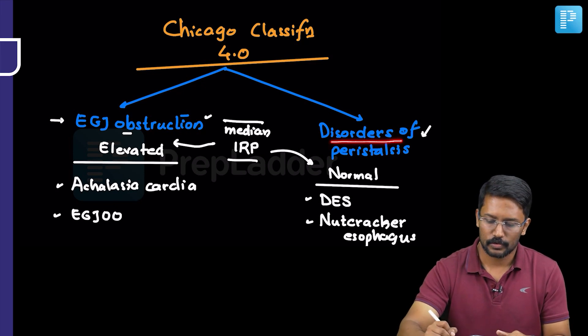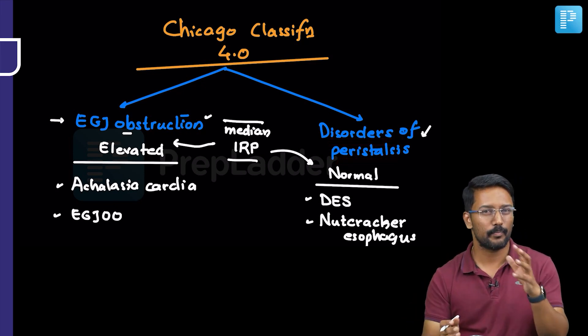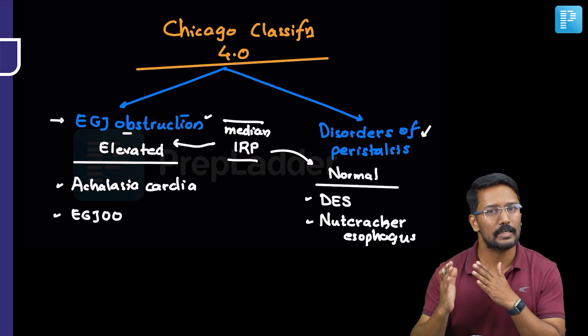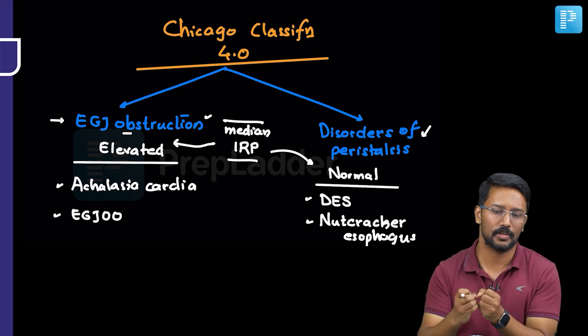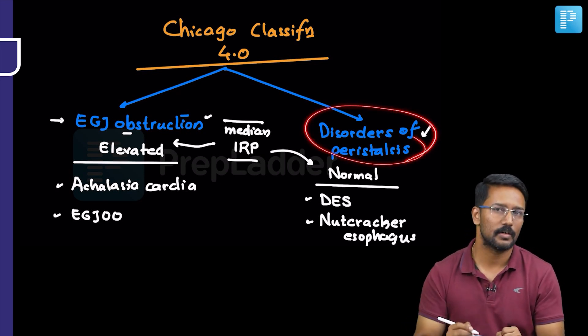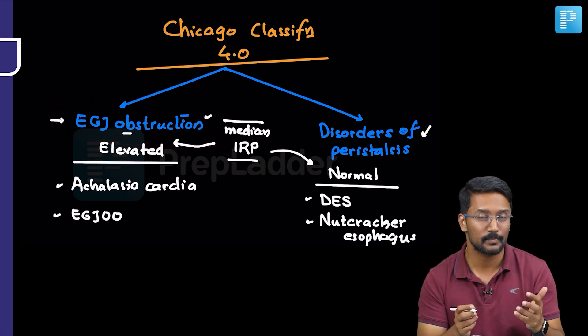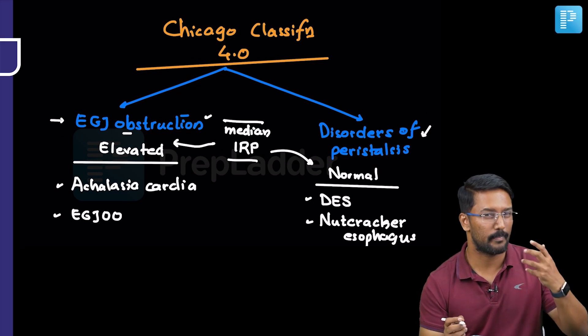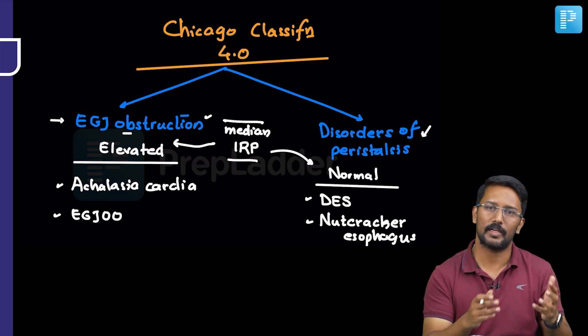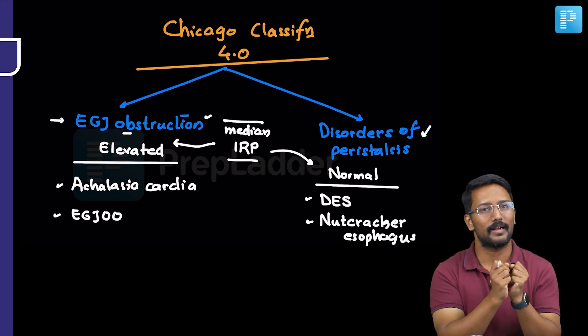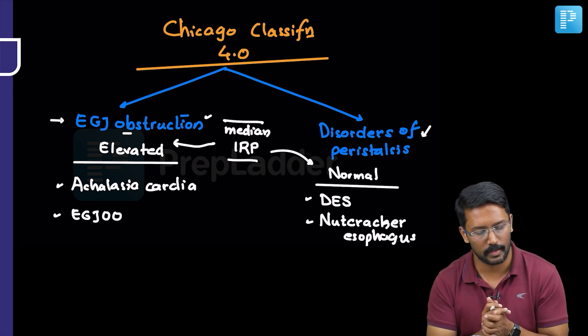And the second category is disorders of peristalsis where the median integrated relaxation pressure is normal. So LES relaxation in these disorders is normal. That does not mean that the obstruction disorders do not have the peristaltic abnormality. They may or may not have the peristaltic abnormality but the primary concern here is that lower esophageal sphincter does not relax well.